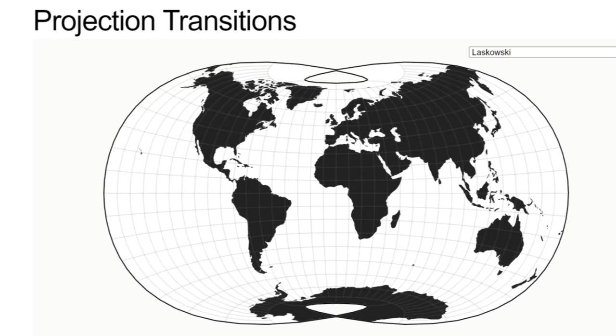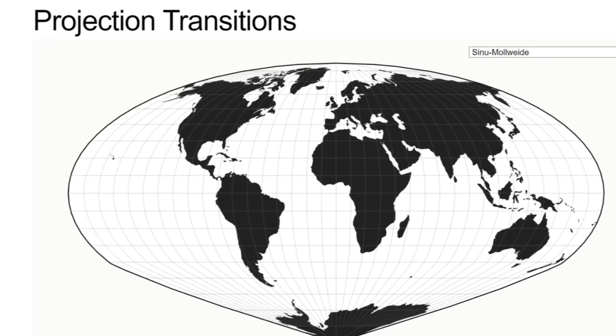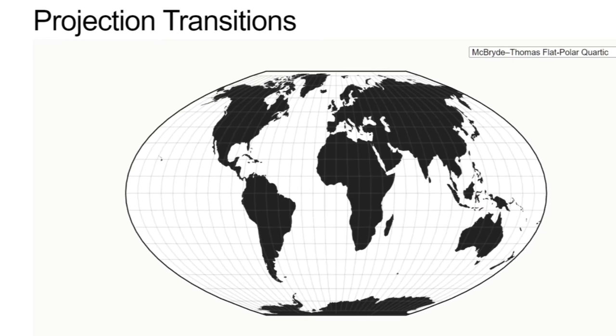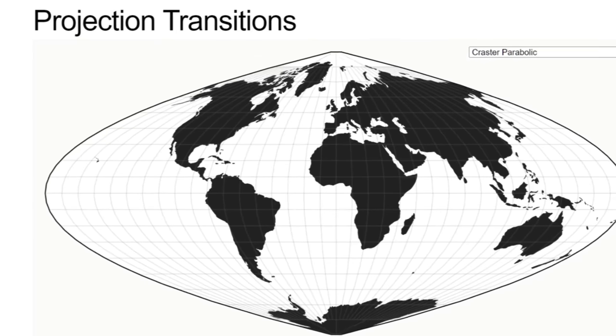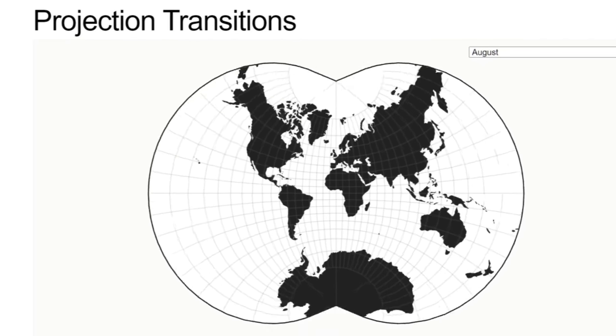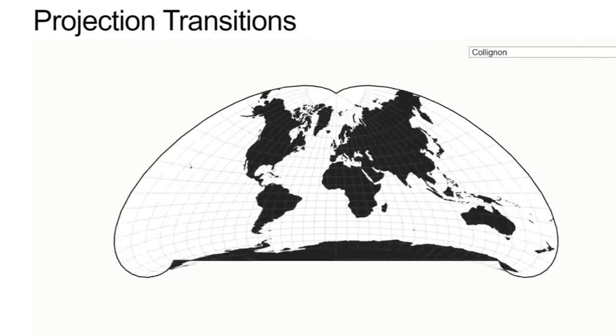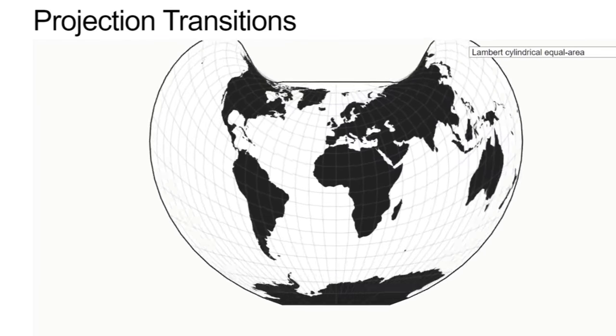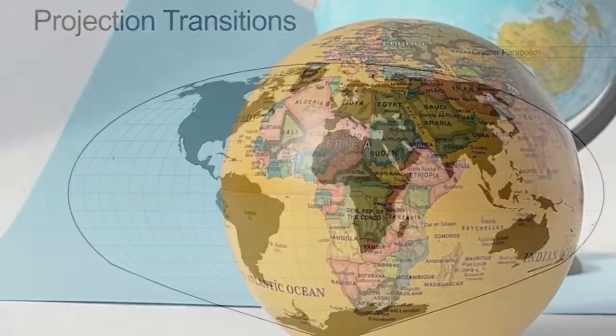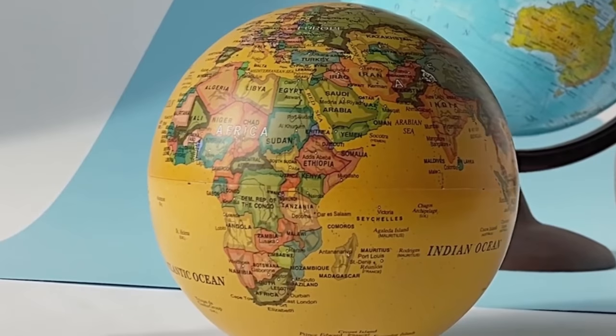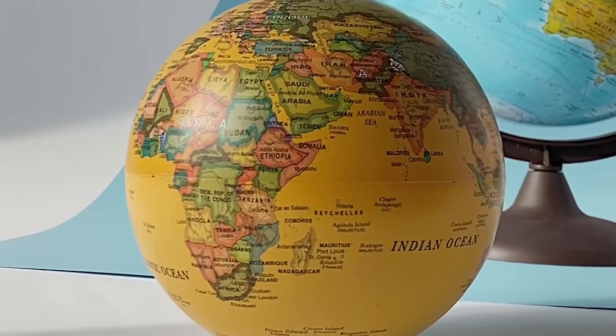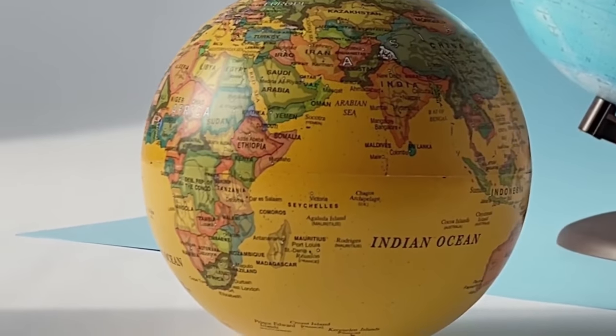Because the world is a sphere, it is impossible to draw it on a flat surface without distorting it in some way. It is mathematically impossible to get it to lie flat, and that right there is the eternal problem of every map maker. The surface of a sphere cannot be mathematically represented as a plane without some form of distortion.